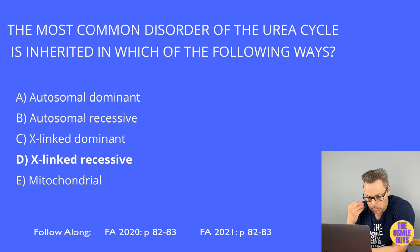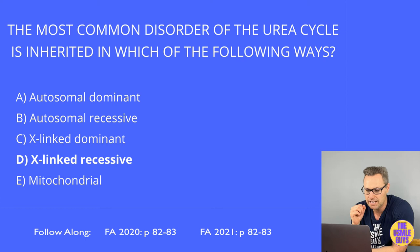When ammonia levels increase, it results in changes to the proportions of alpha-ketoglutarate, glutamate, GABA, and glutamine. A decrease in those proportions results in CNS toxicity and cerebral edema, as a result of the glutamine-induced osmotic shift that ensues.